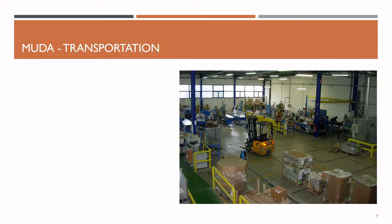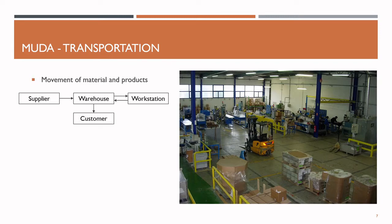The first waste is transportation. By transport we mean the movement of material and products. For example, the transport of material from a supplier to a warehouse, then from the warehouse to a workstation for manufacturing. After the product is finished, it gets transported from the workstation back to the warehouse, and from there it gets delivered to the customer upon order. The materials often move for thousands of kilometers before they get worked on, but the customer is probably only willing to pay for the transport directly to them, not for the movement between warehouses and workstations. Therefore, we consider transport as a waste and want to keep it as short as possible.